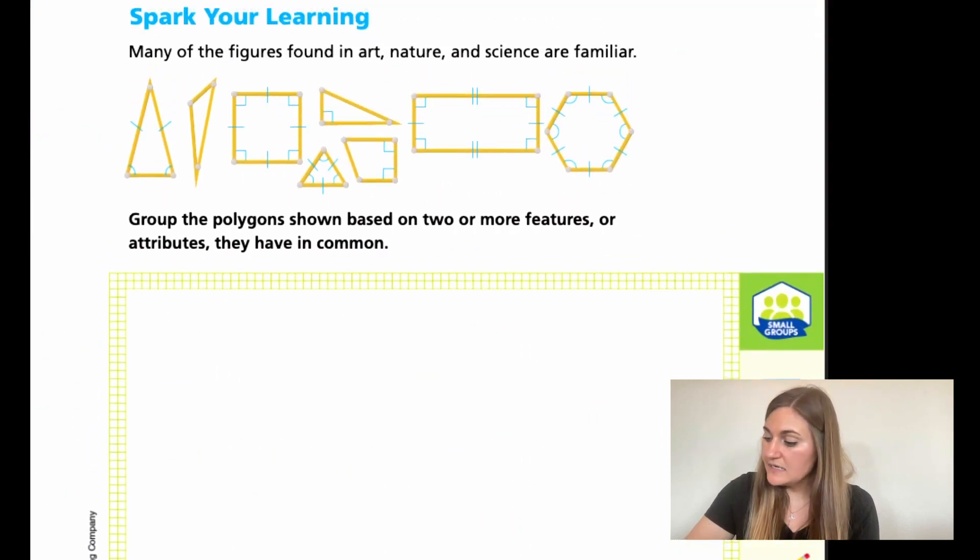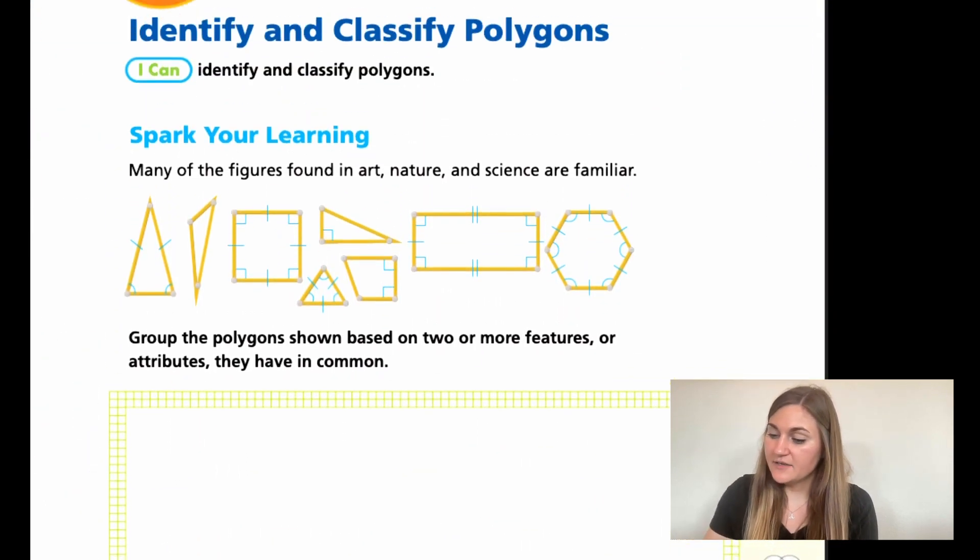All right. So moving into the lesson, we're on page 497. We have a Spark Your Learning. It says many of the figures found in art, nature and science are familiar. So group the polygons shown based on two or more features or attributes they have in common.